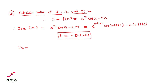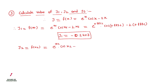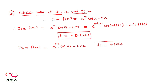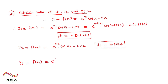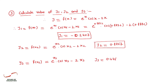Similarly, calculate y2 by substituting x2 into the given function: y2 = e^(x2)·cos(x2) − 2·x2, giving y2 = 0.8860. Next, calculate y3 by substituting x3 = 0.5 into the function: y3 = e^(x3)·cos(x3) − 2·x3, giving y3 = 0.4468.